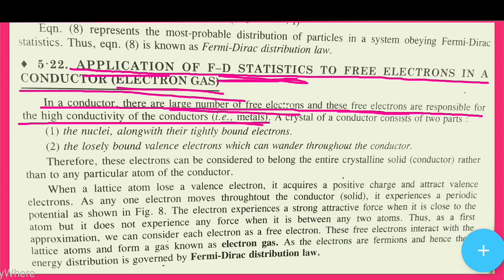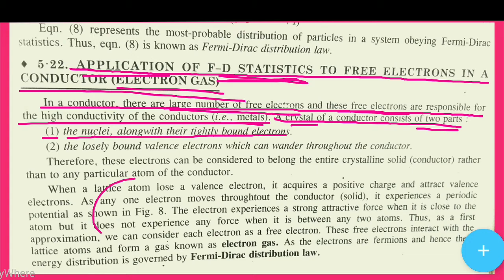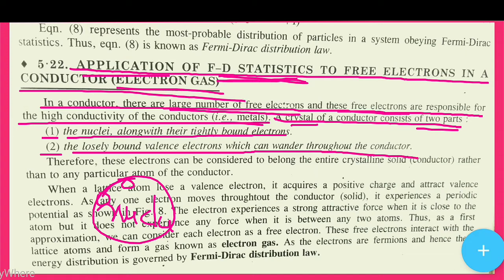A crystal of a conductor consists of two parts. The first is the nuclei along with the tightly bound electrons. The second is the loosely bound valence electrons which can move through the conductor.